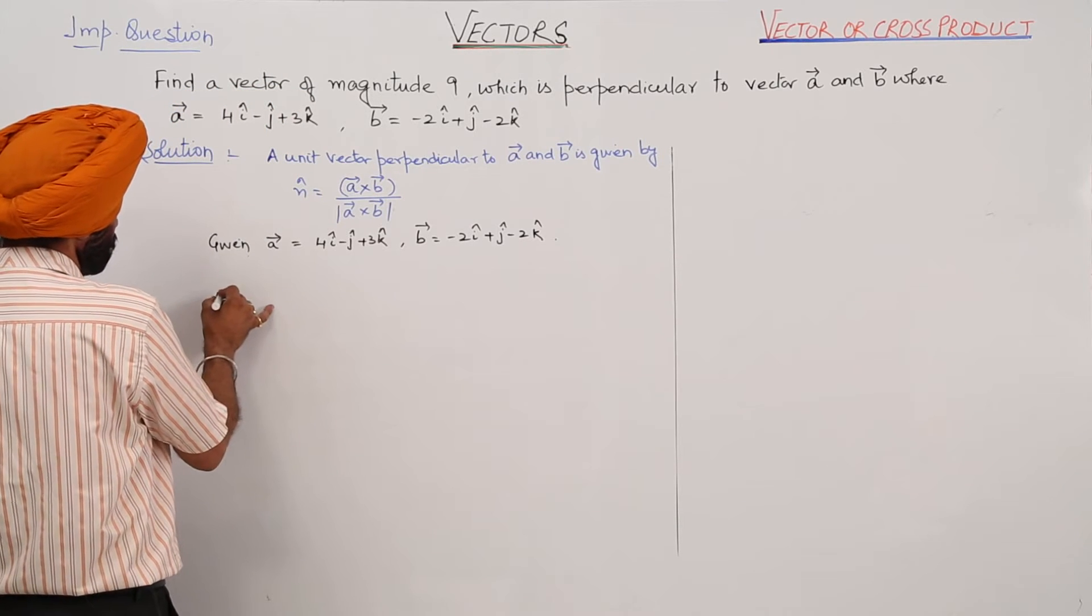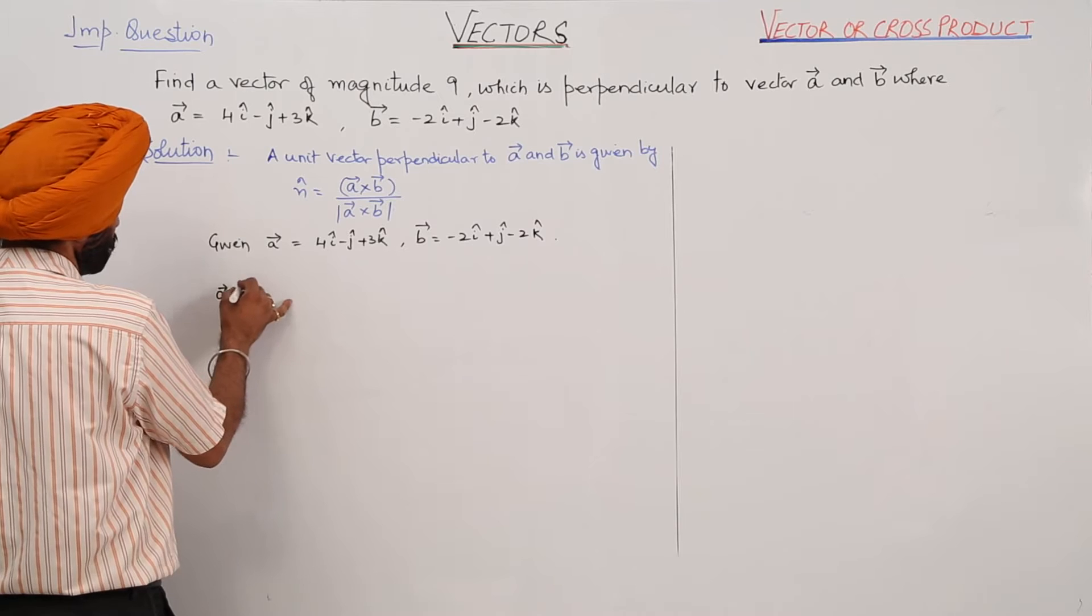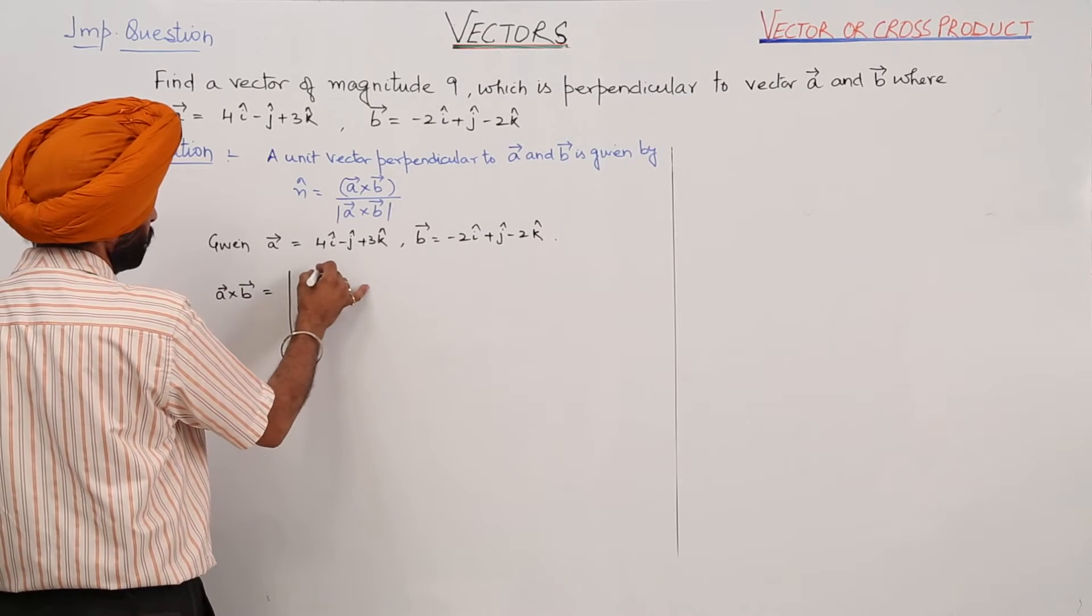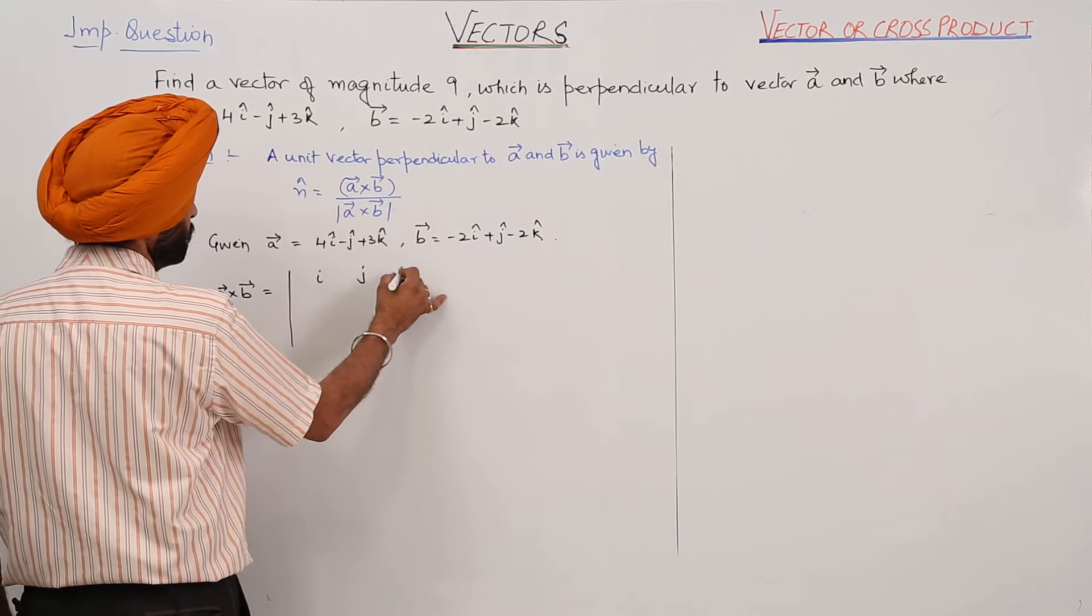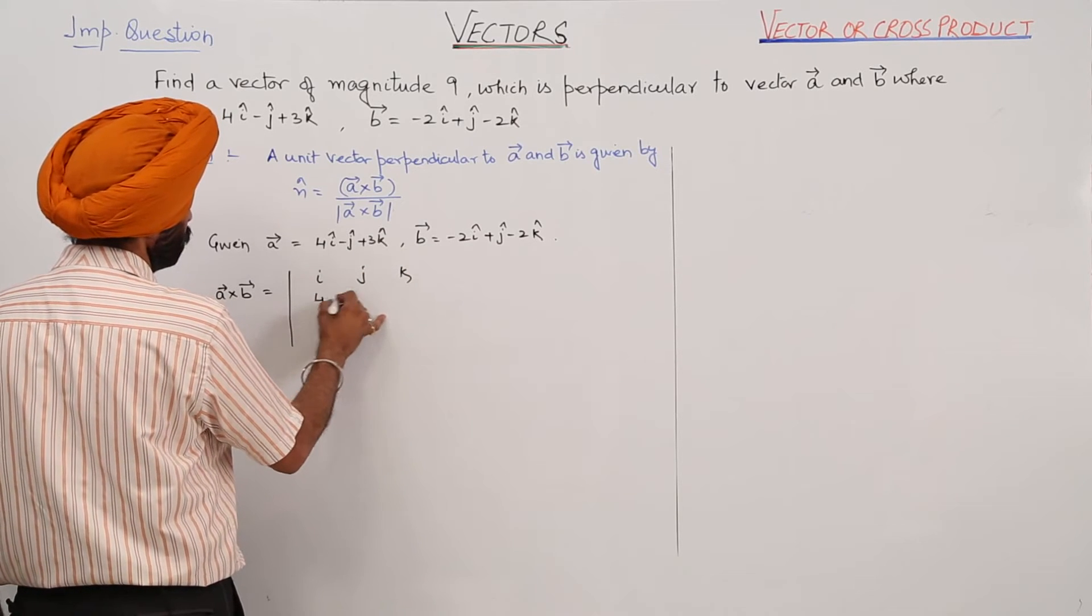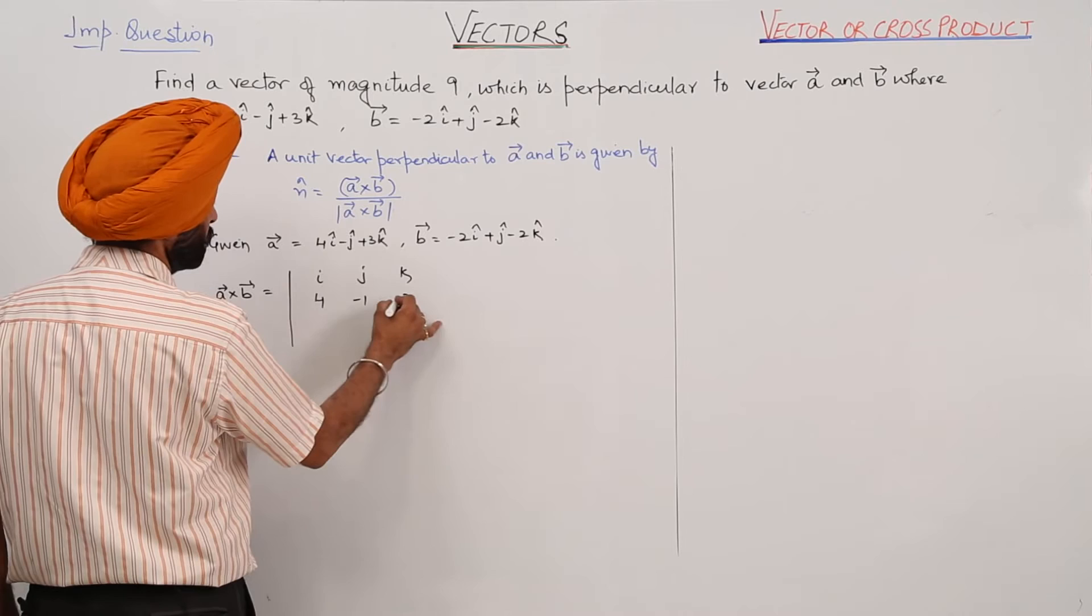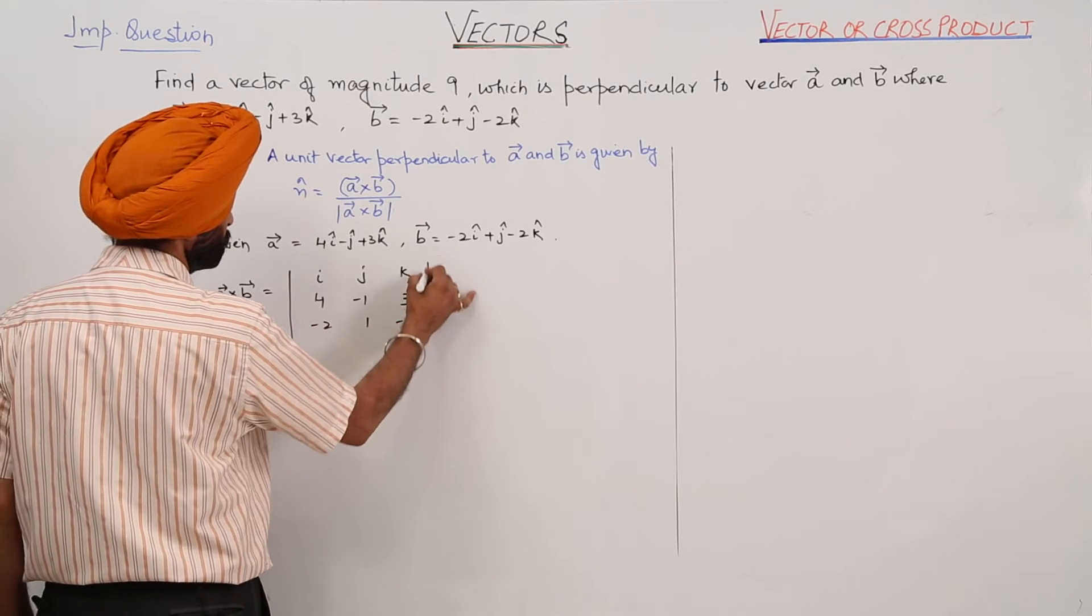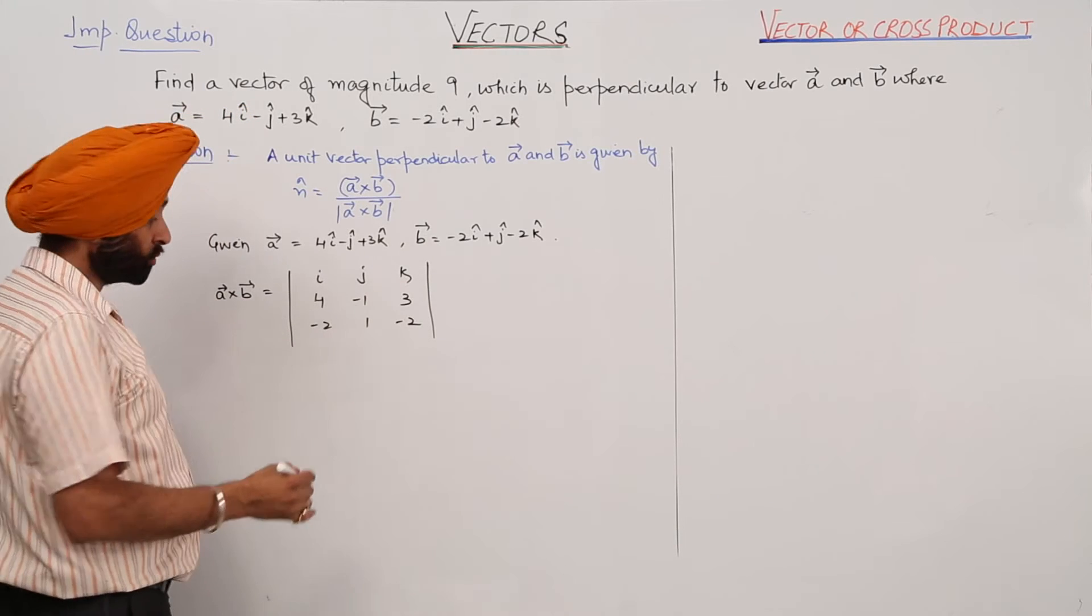To find A cross B, we write it in determinant form: i, j, k with 4, minus 1, 3 and minus 2, 1, minus 2. Let's solve it.